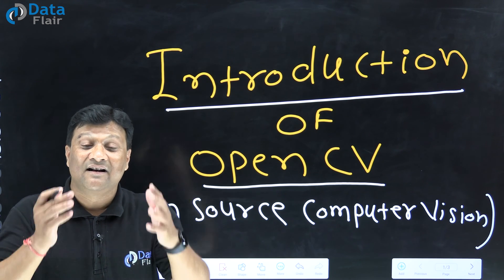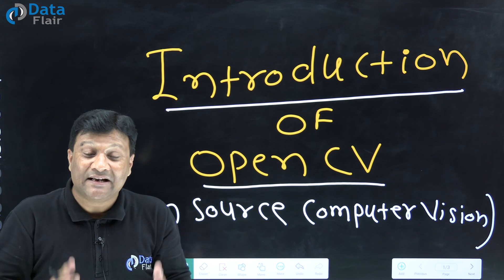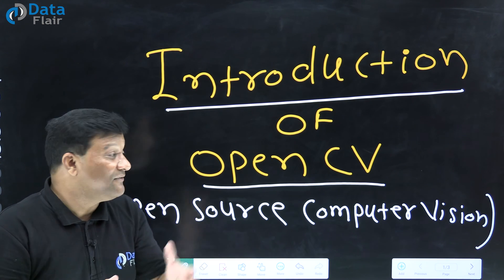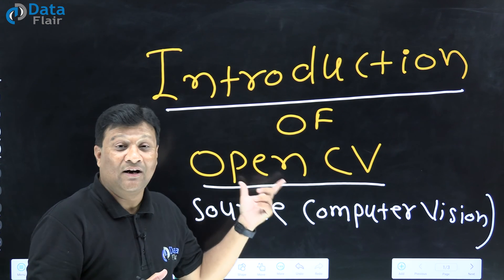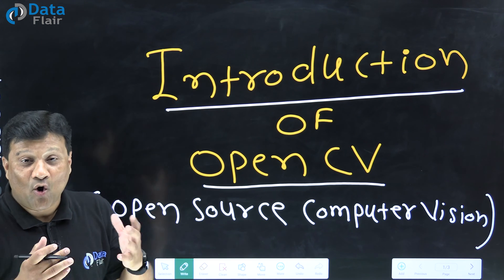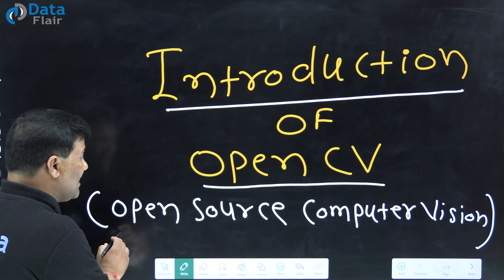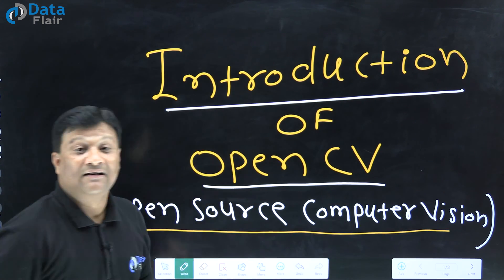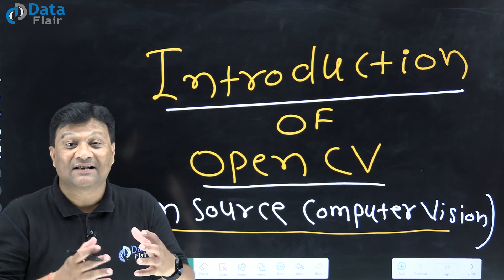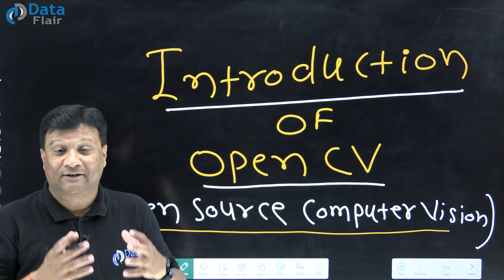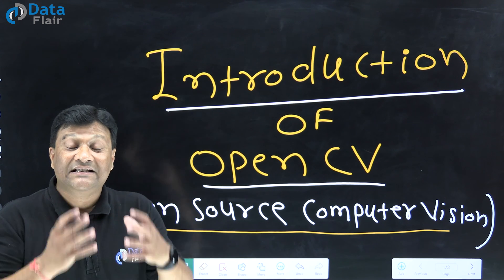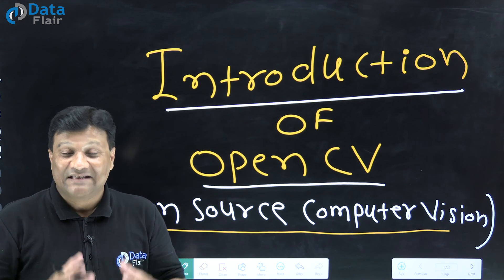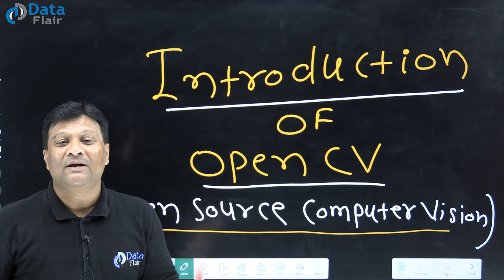Such type of applications related with images and video processing we are going to easily design with the library called OpenCV. This OpenCV basically stands for Open Source Computer Vision Library. This is one of the libraries supported by Python to work with digital images as well as videos. When you have images and videos, you can create an application.